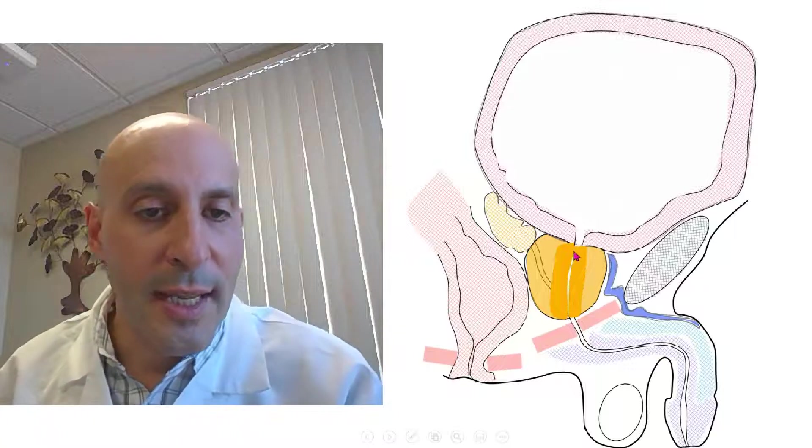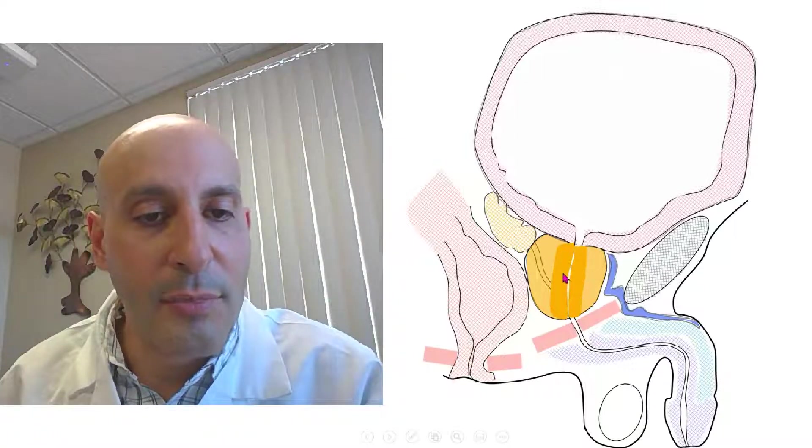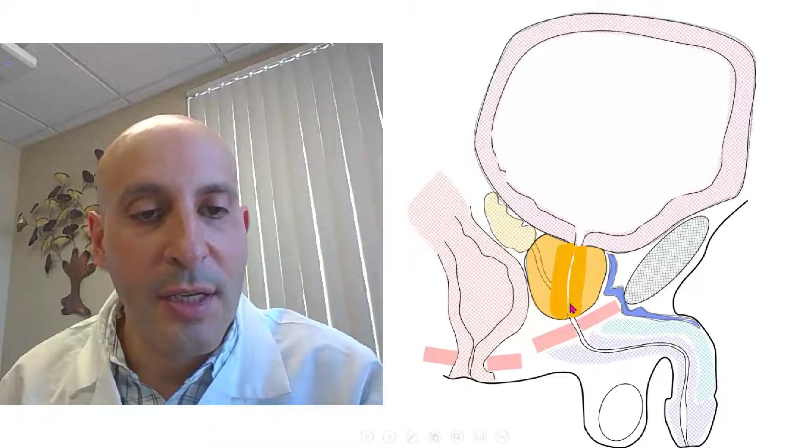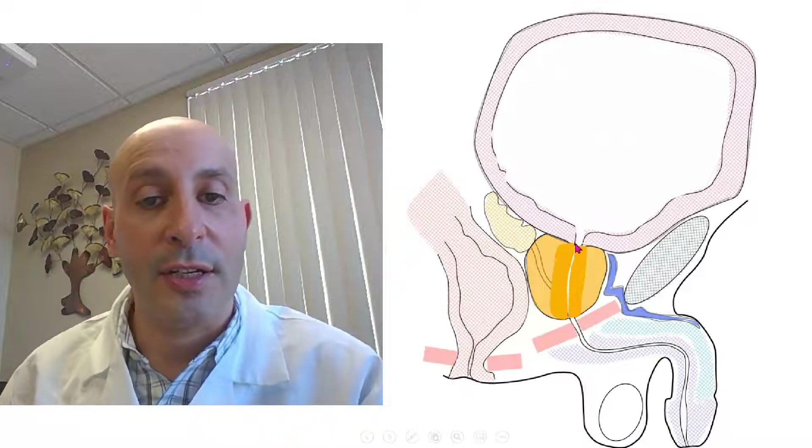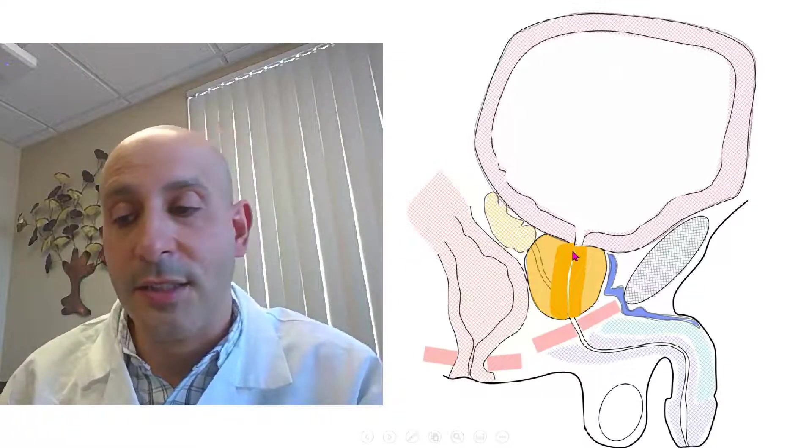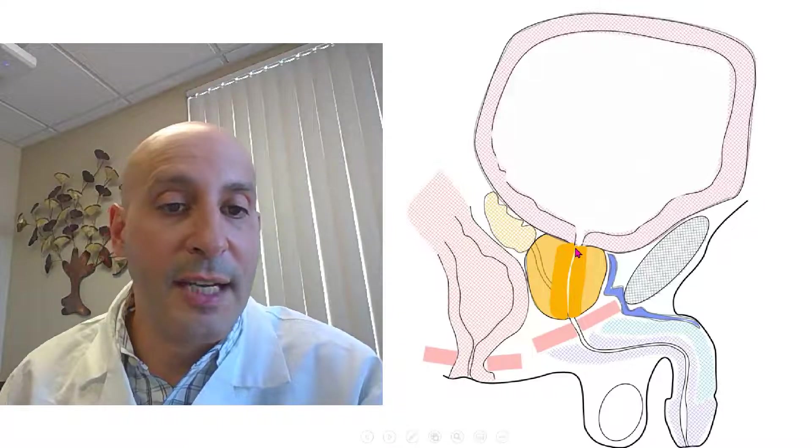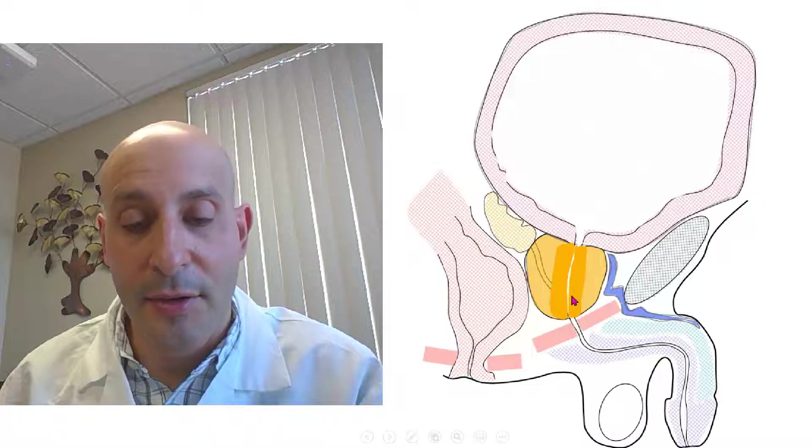As a man gets older and the prostate enlarges, it can encroach on or compress the urethra channel, making the stream much weaker, harder to urinate, harder to get the stream started. Maybe having to urinate twice in a row, feeling of not emptying, occasionally not being able to pee at all, and having to have a catheter put in.